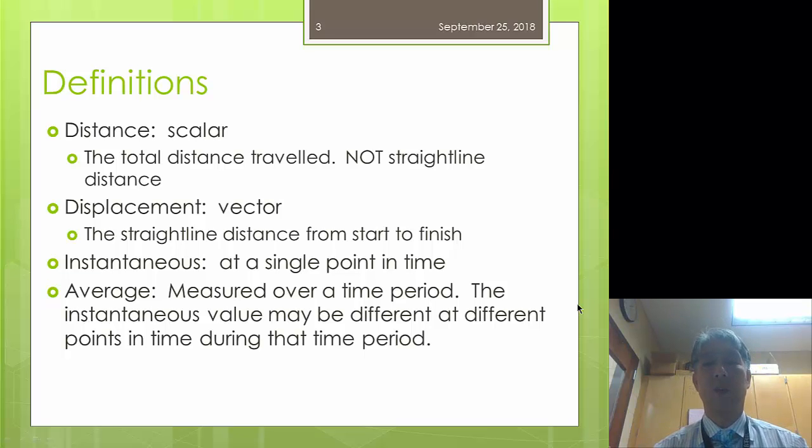We also have two adjectives. We have the adjective instantaneous, which measures or calculates, describes the velocity or acceleration at a specific point in time. This is the default adjective that we would use. If neither instantaneous or average is put in front of velocity or acceleration, we assume we mean instantaneous. The other word is average and this means that I'm measuring my velocity or calculating my velocity over a specific time period.